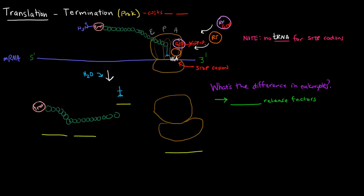So then what happens is that we free up this peptide chain — the peptide chain is now free, the tRNA is free, and the ribosome is free, and the ribosome eventually dissociates. Translation termination costs the equivalent of one GTP, which is the equivalent of one ATP.